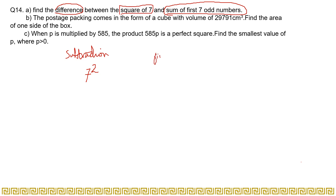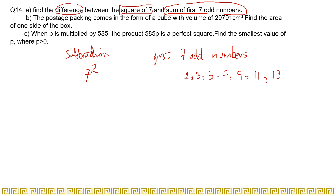Let's find the first 7 odd numbers. For this you must know what odd numbers are — those numbers that are not divisible by 2. That is: 1, 3, 5, 7, 9, 11, and 13. So you have written the first 7 odd numbers: 1, 3, 5, 7, 9, 11, and 13. And when you solve 7 to the power 2, that is 7 multiplied by 7, you get 49.